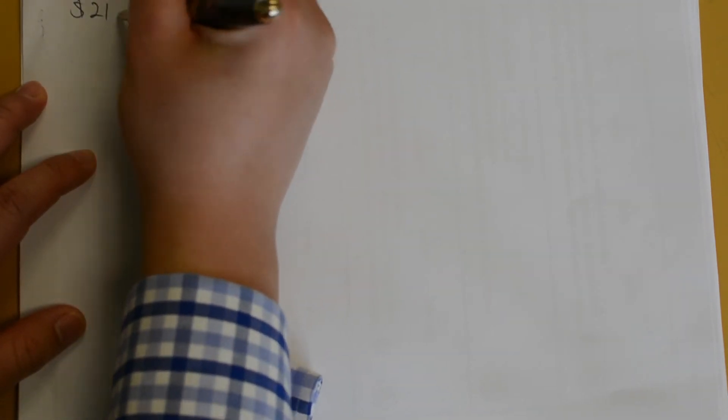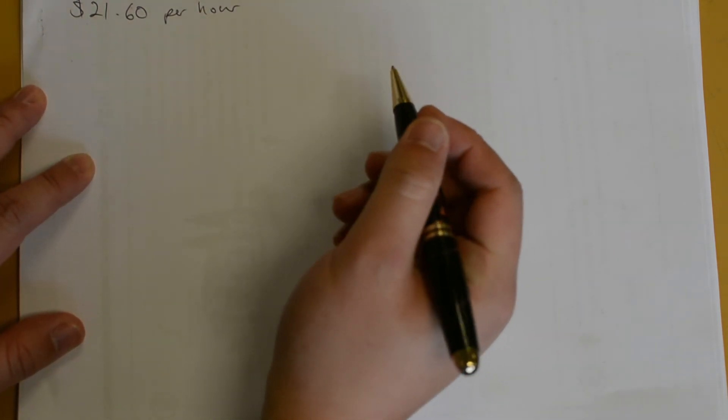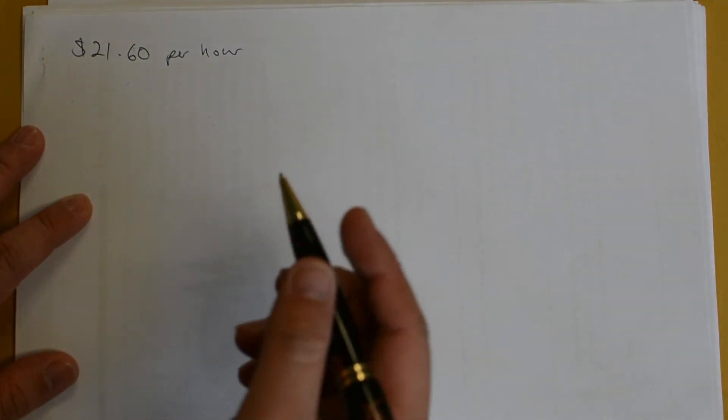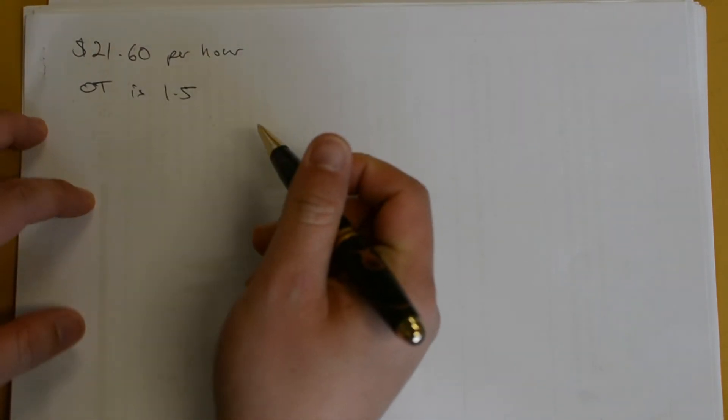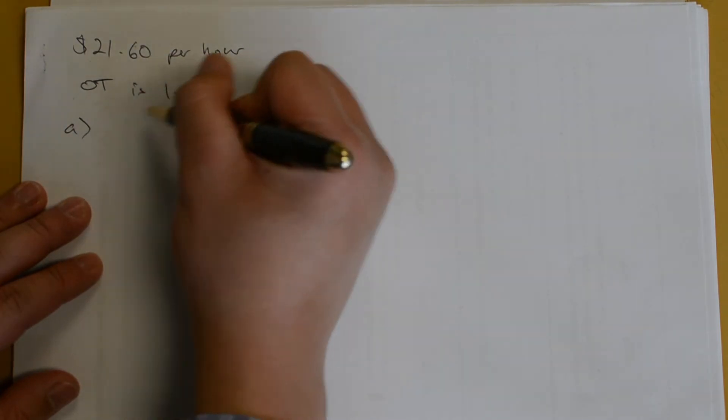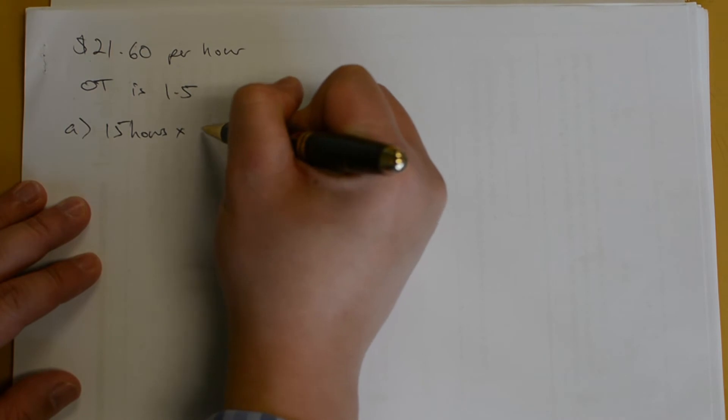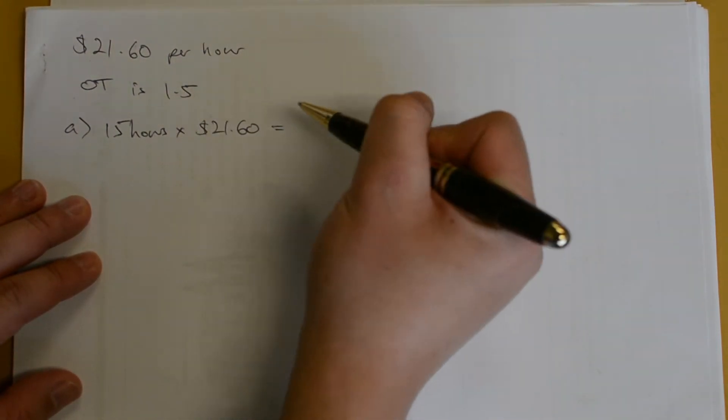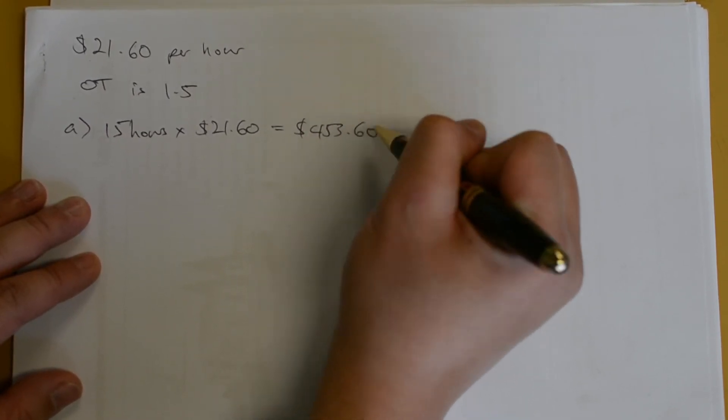I'll just write down some of that information again. He earns $21.60 per hour. And his overtime rate is time and a half. To calculate his weekly wage, we must first... it's 15 hours. So, he works 15 hours at his rate of $21.60. And that will give you $453.60.